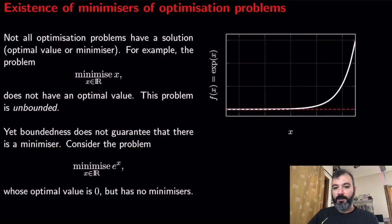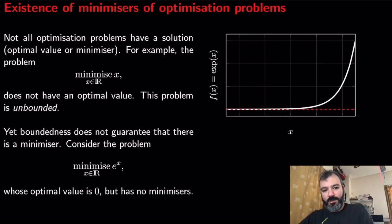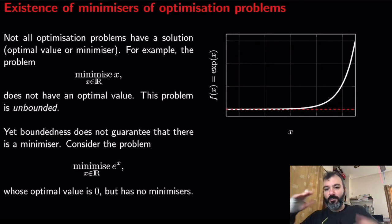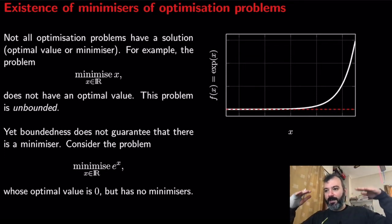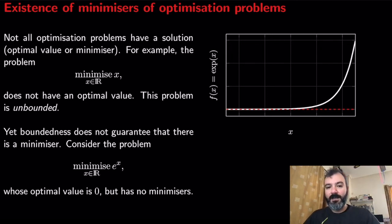On the other hand, boundedness — the opposite of unboundedness — the fact that you can draw a horizontal line and have your whole function above that horizontal line, doesn't imply that we have a minimizer. Let me give you an example.